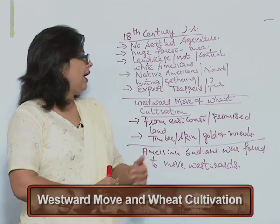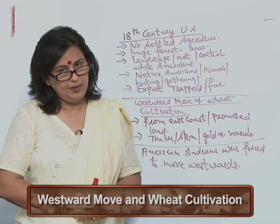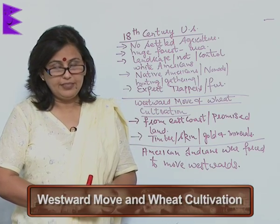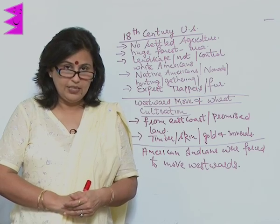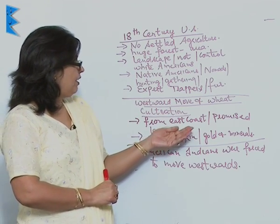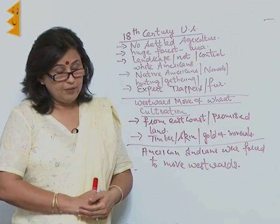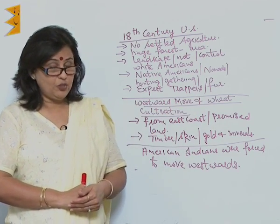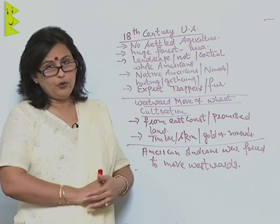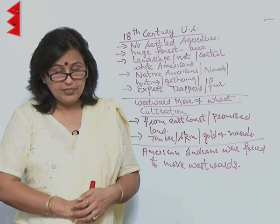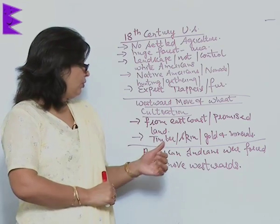Agriculture had not stabilized in America in the 18th century. But suddenly there was a westward move and wheat cultivation was seen at this time. When Thomas Jefferson became president, lots of people started moving from the east coast westward, as America seemed to be a land of promise where they could cultivate fields and grow food grains.